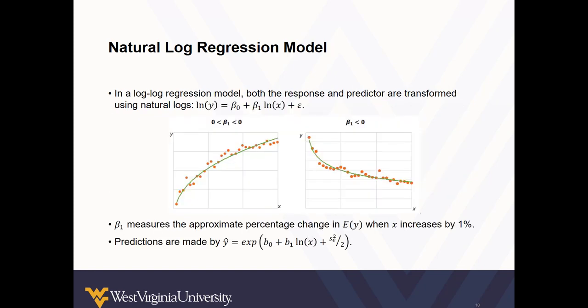In a log-log regression model, both the response and the predictor are transformed using natural logs. These scatter plots illustrate relationships that take the shape of a natural log. Note how beta 1 measures the approximate percentage change in the estimated value of y when x increases by 1%.